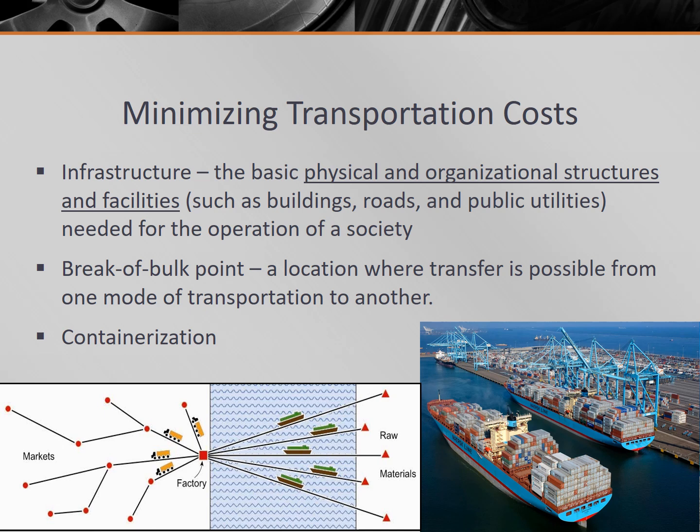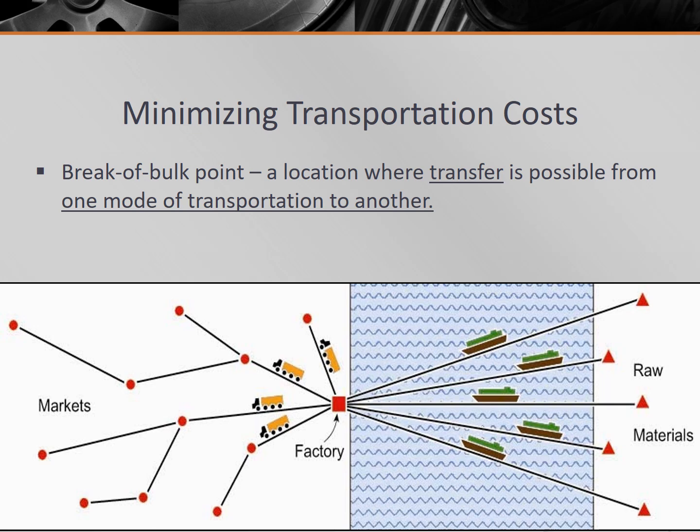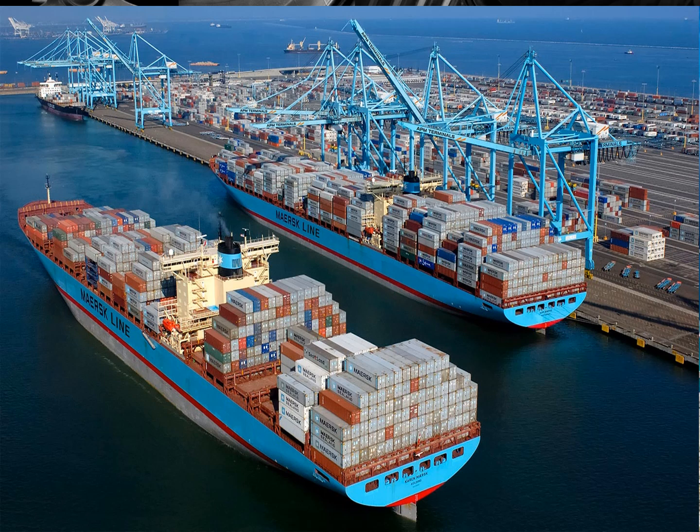In addition, we've seen the clustering of transportation infrastructure into what we call break of bulk points, which are locations where transfer is possible from one mode of transportation to another. The transfer of cargo from ships to trucks occurs at a break of bulk point. These are typically ports, but also airports, railway stations, and other waterways like canals. If a factory were to locate at a break of bulk point, transportation efficiency increases, the total cost declines, meaning profits will increase. The Los Angeles port is a great example — it is the busiest port in the United States, and shipping containers can quickly be transferred from massive container ships to individual trucks and trains to be shipped inland using the established infrastructure.